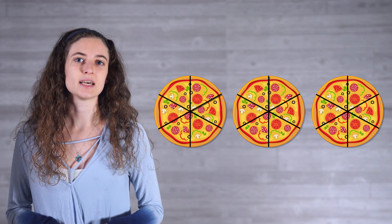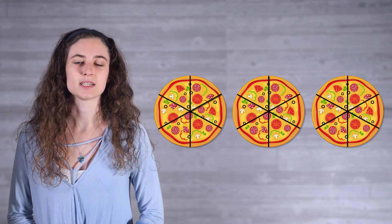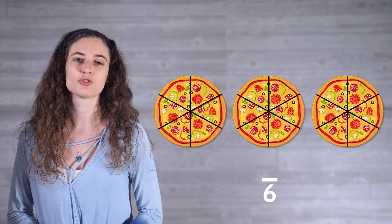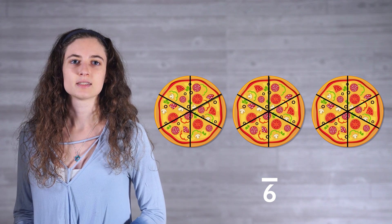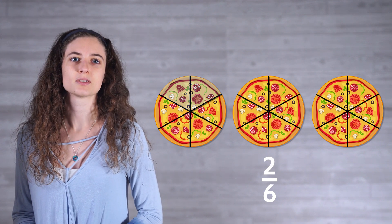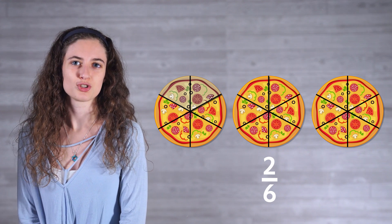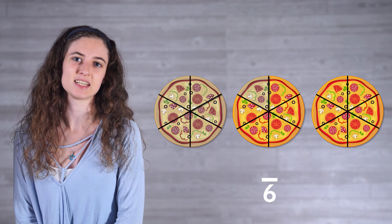Consider the following scenario: you are ordering pizza for a big celebration. There will be lots of hungry guests, so you order 3 pizzas. Each pizza is cut into 6 slices, meaning each pizza has 6 equal parts, and as a fraction, 6 would be considered our whole, or our denominator. If your first guest eats 2 slices, we would represent this as the fraction 2/6 — 2 parts out of 6 parts total.